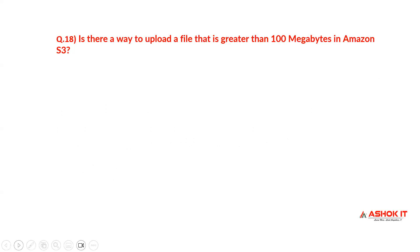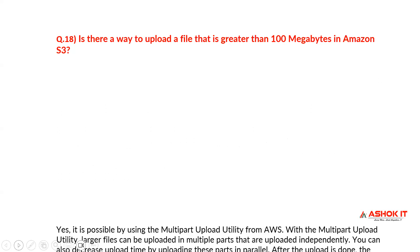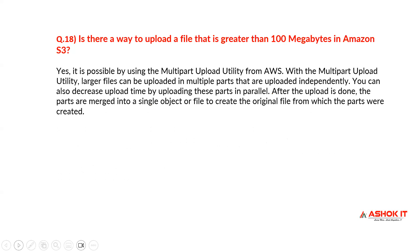Is there a way to upload a file greater than 100 megabytes in Amazon S3? Yes, it is possible by using the multipart uploading utility from AWS. With multipart uploading, larger files can be uploaded in multiple parts that are uploaded independently. You can also decrease upload time by uploading these parts in parallel. After uploading is done, the parts are merged into a single object to create the original file.